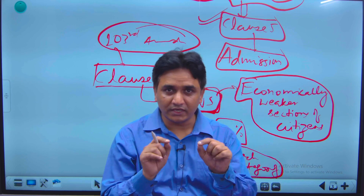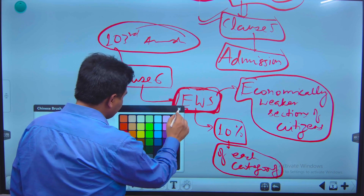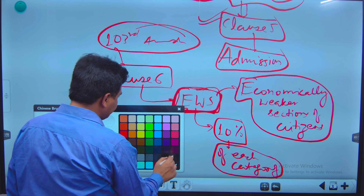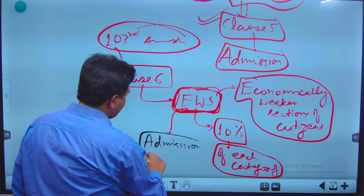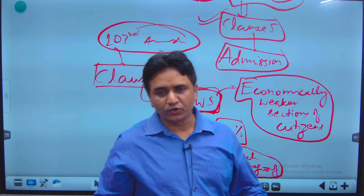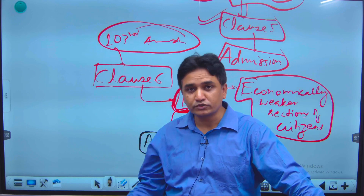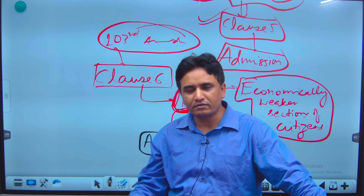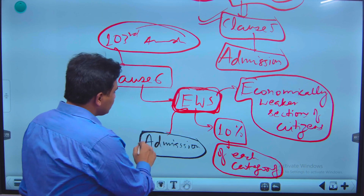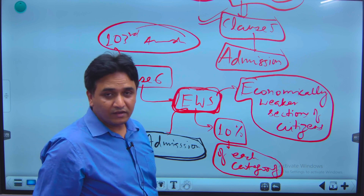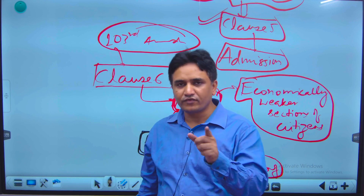Under Article 15 Clause 6, we are talking about admission. So if an EWS candidate is going to take admission in any institute — government or private, whether aided or unaided by the government, except minority institutions — he or she will be benefited. So Clause 6 of Article 15 is going to help EWS candidates in taking admissions in different institutions.